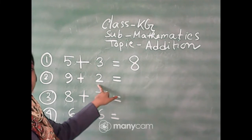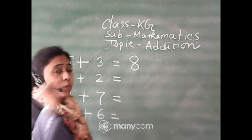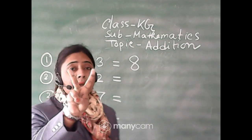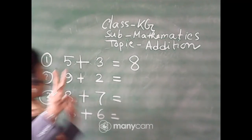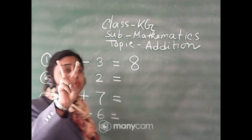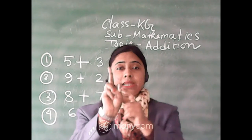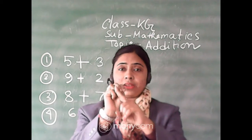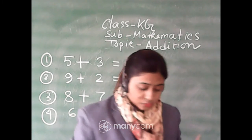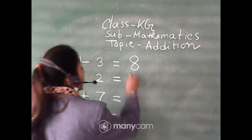Next, number two: nine plus two. Same thing — find the small number first. Here two is the small number, so one, two fingers. The other number is nine, so counting on from two: ten, eleven. So nine plus two is equal to eleven.